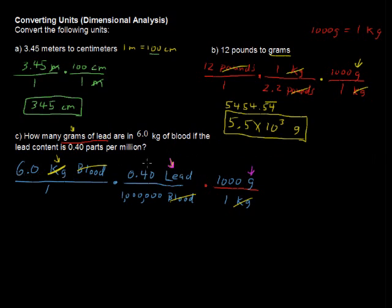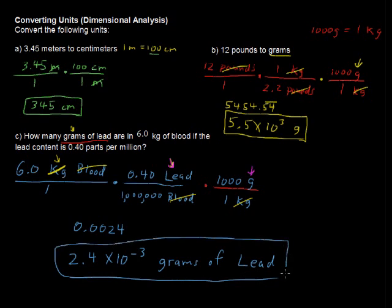So doing the math on all that, 6.0 times 0.40 times 1,000 and then all divided by 1 million, that brings us to an answer of 0.0024 grams, or I could write that as 2.4 times 10 to the negative third in scientific notation, grams of lead. Sounds pretty dangerous, but that is not that much, and so we have it in our system and it's not that much, it's not hurting us so far.